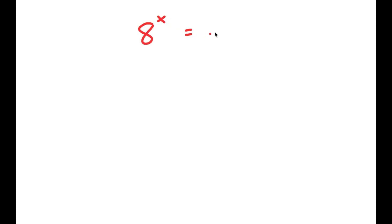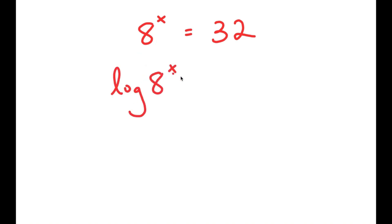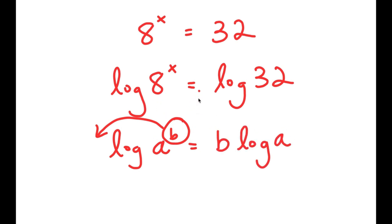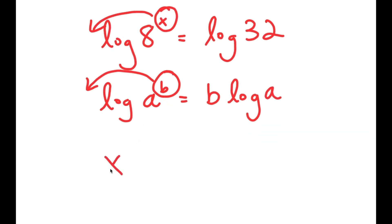In this video, I'm going to solve the equation 8 to the power of x is equal to 32. To solve this, I'll start by taking the log on both sides. So I get log of 8 to the power of x is equal to log 32. If I have something in the form log of a to the power of b, I can move b to the front, giving b times log a. So x times log of 8 is equal to log of 32.